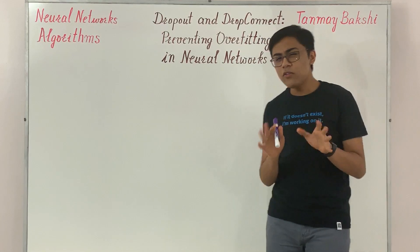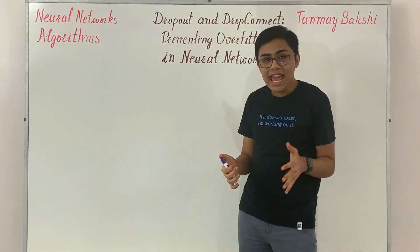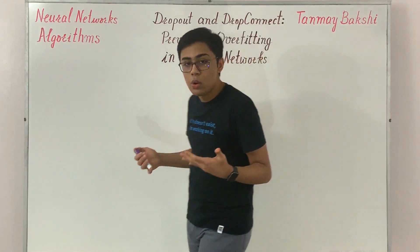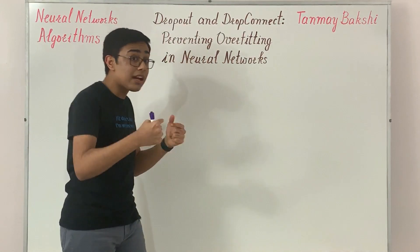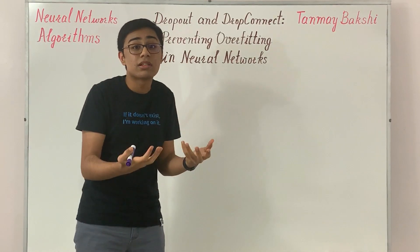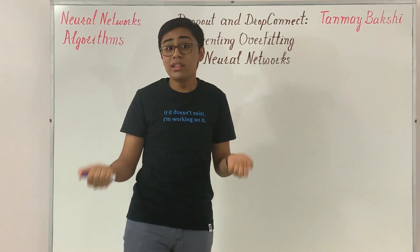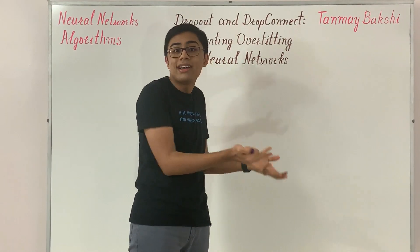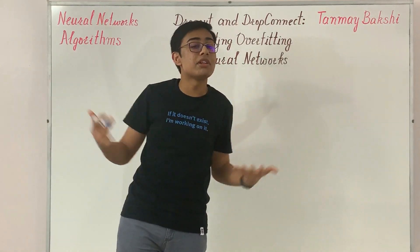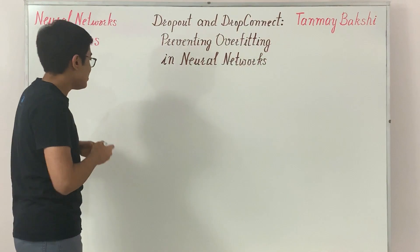Overfitting is when your neural network memorizes its data rather than generalizing. Whatever you train it on, it has remembered, but it's unable to handle new data and give you good results because it's just trying to memorize what it was trained on.